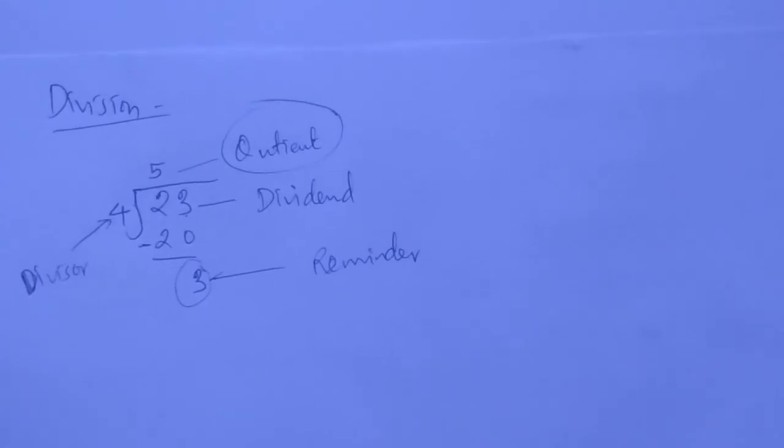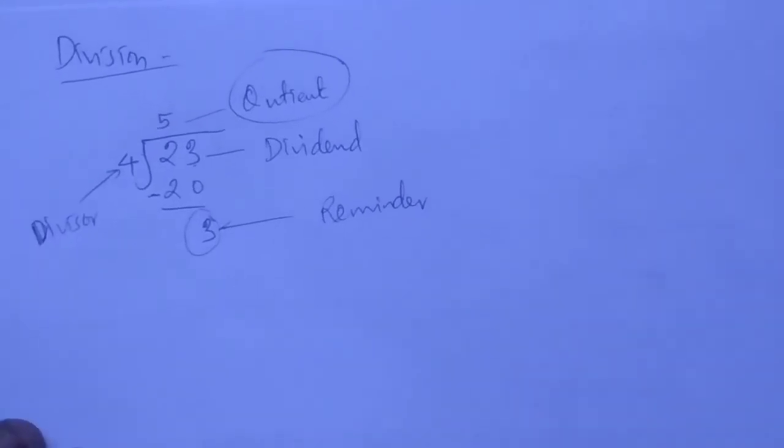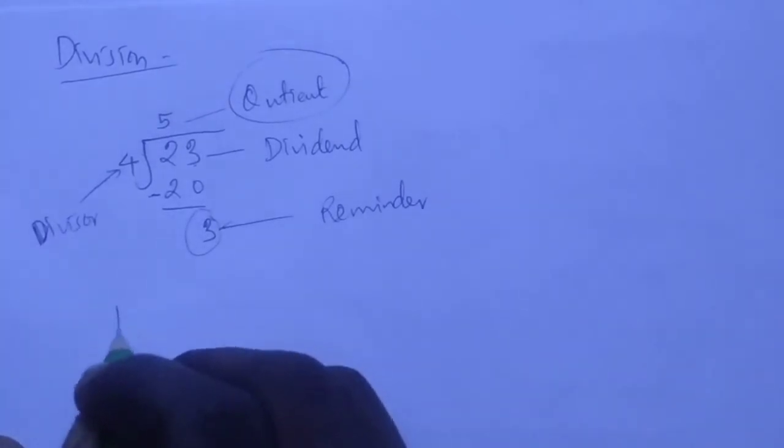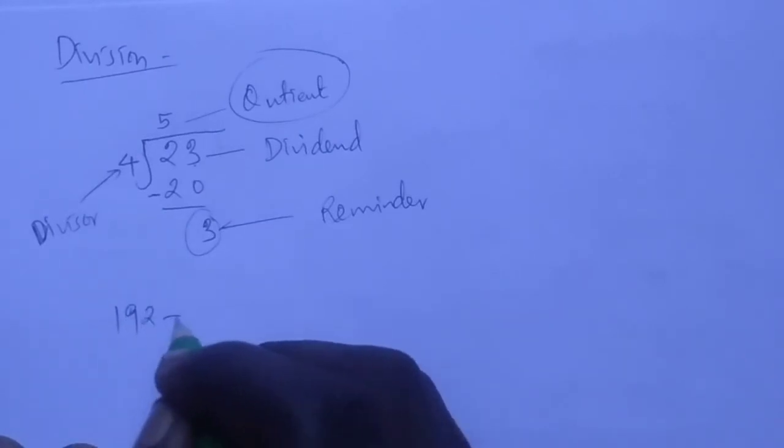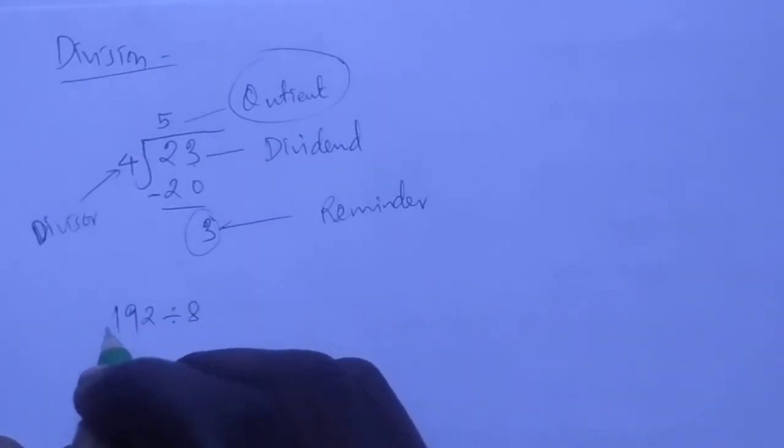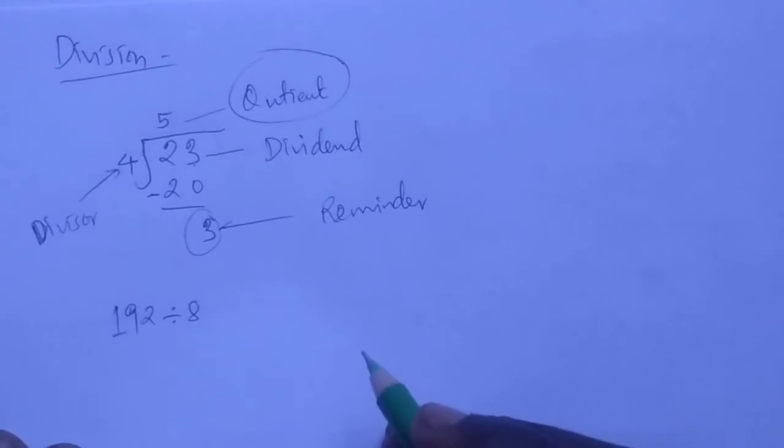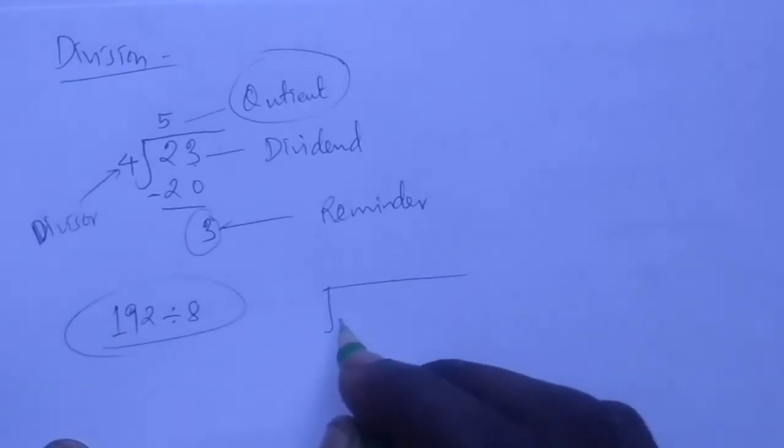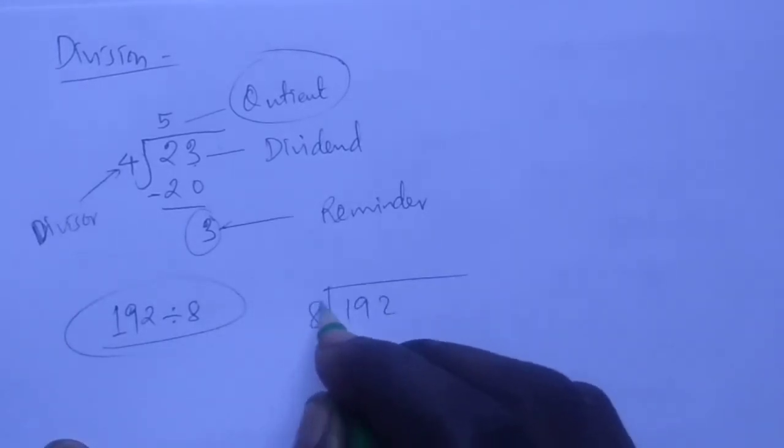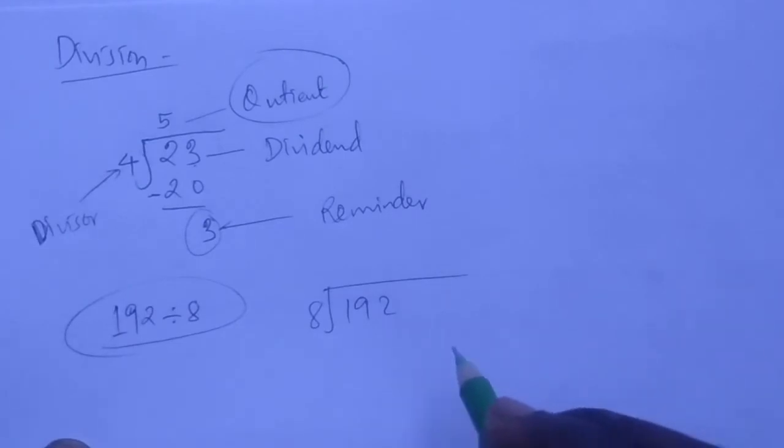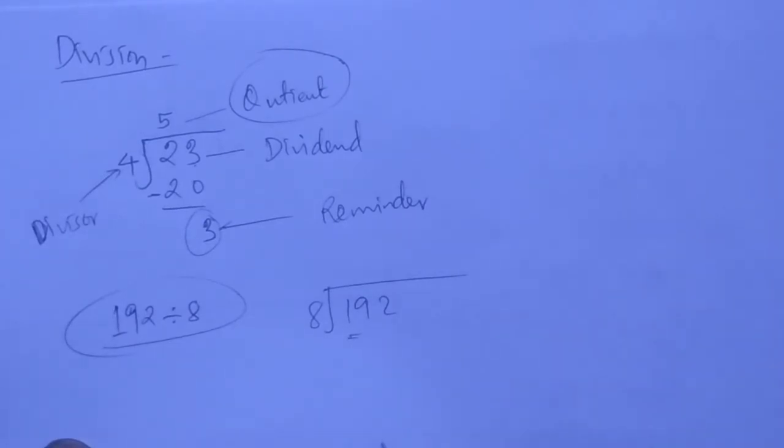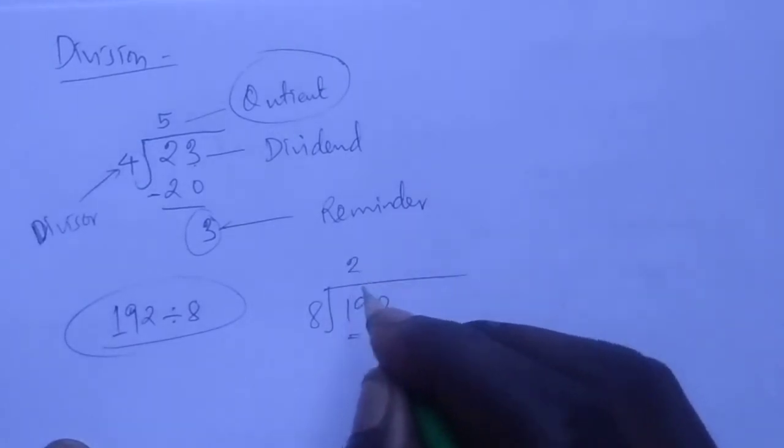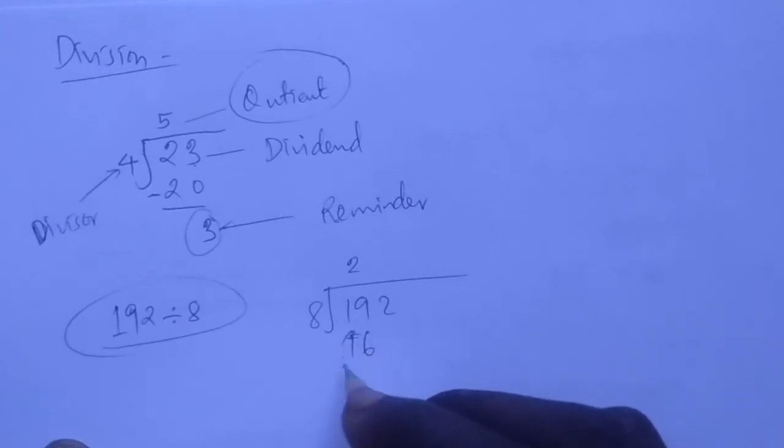For short division, let's take 192 divided by 8. The same principle is used. We look at how many times 8 goes into 19 - it goes in 2 times. That gives us 16. Then we remain with 3.